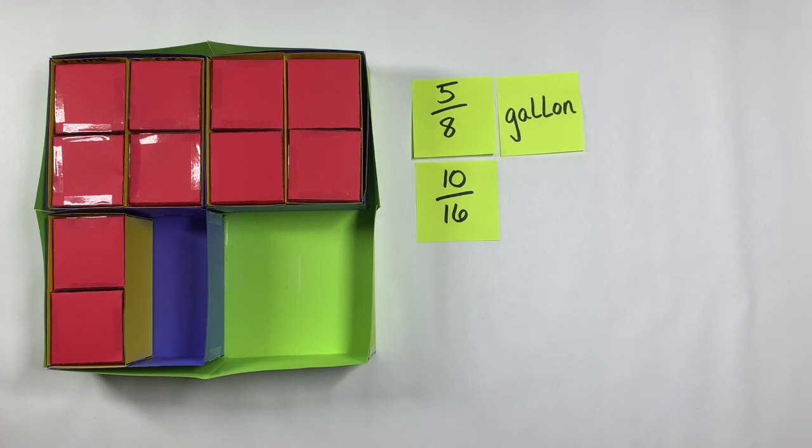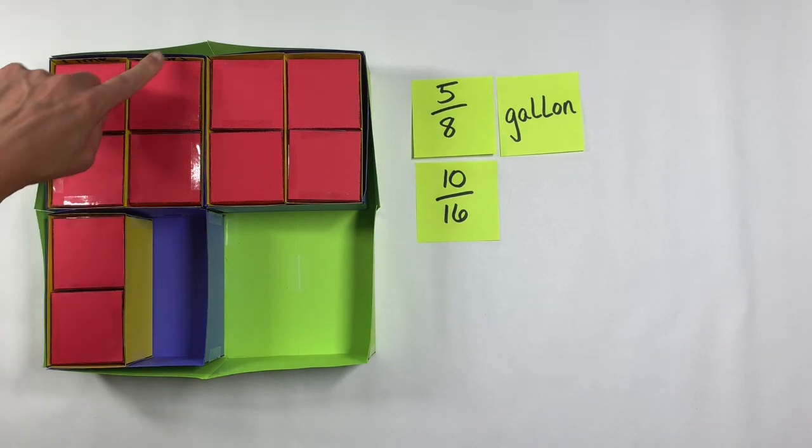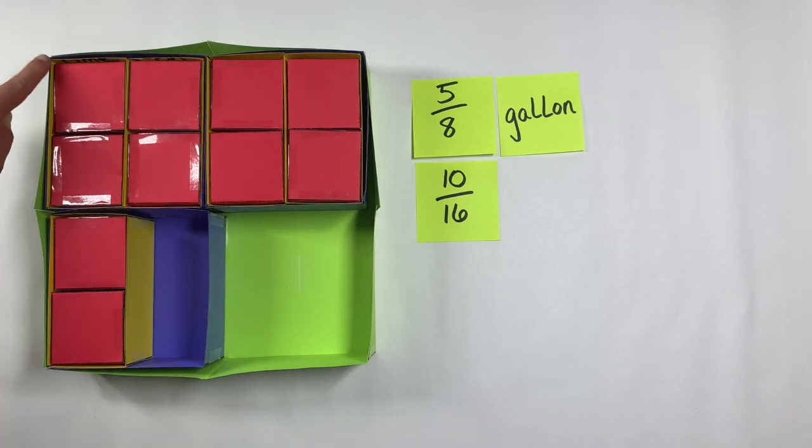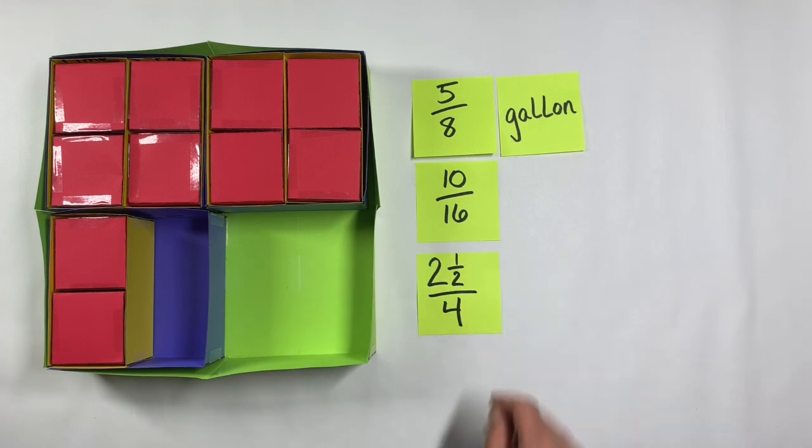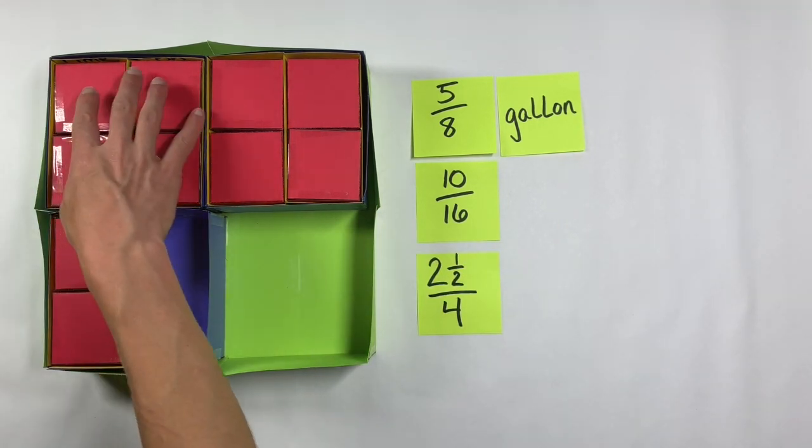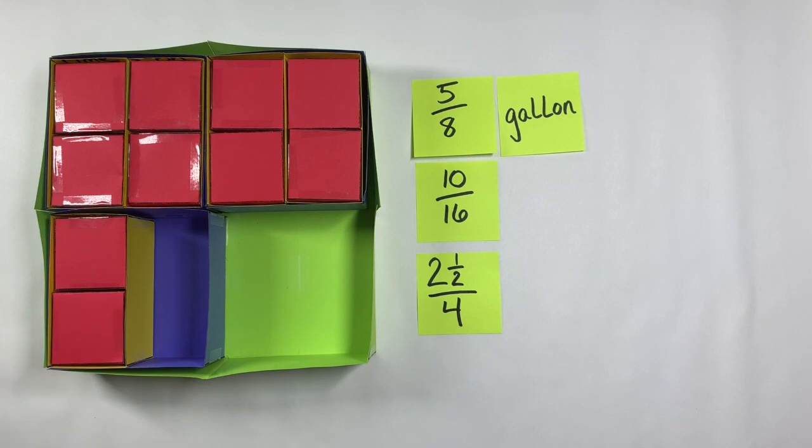Some students might get really creative and they might choose to try to measure our gallon fraction using quarts. And they might say we have one, two, and a half of the four quarts that we would need to make the gallon. This is going to give us a complex fraction. Two and one half fourths of a gallon. We have two and a half quarts and it takes a total of four quarts to make up our whole gallon.